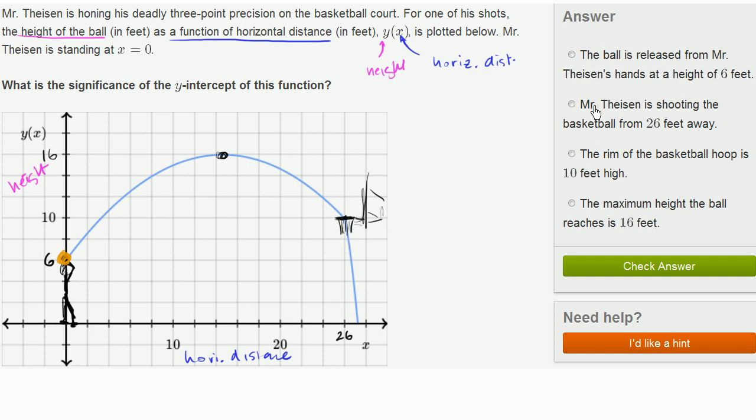Now, let's see which of these interpretations are consistent with the interpretation that we just did. The ball is released from Mr. Theusson's hand at a height of 6 feet. Well, that looks exactly right. When x is equal to 0, the ball is 6 feet. And not only is that right, but that is the significance of the y-intercept of this function.